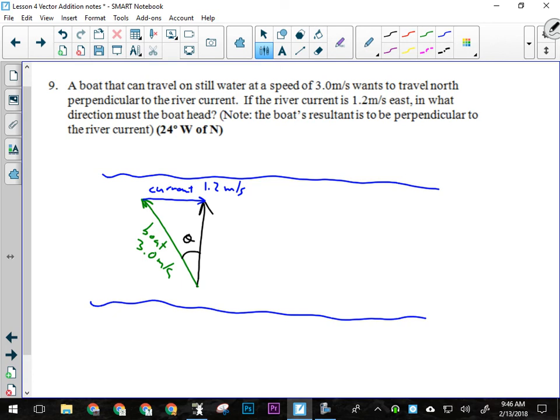That means I've got to find theta. I need to know what angle into the current I need to aim the boat so it'll end up going straight across the river. Do I have two sides of that triangle? Can I find that angle? Yeah. It's just going to be trigonometry. I have the opposite side to the angle and I have the hypotenuse. Which trig function will that be? Sine.